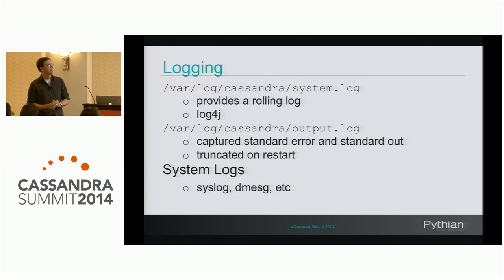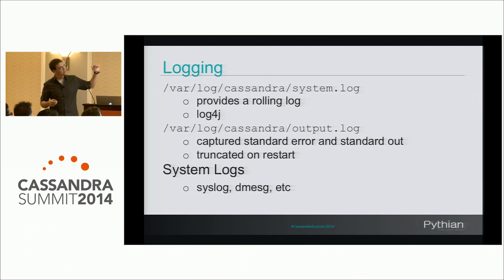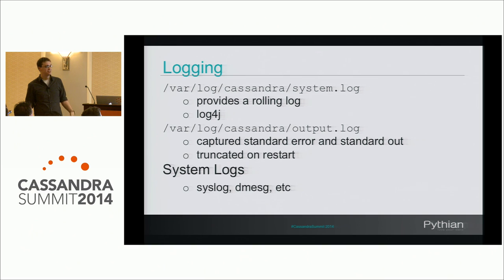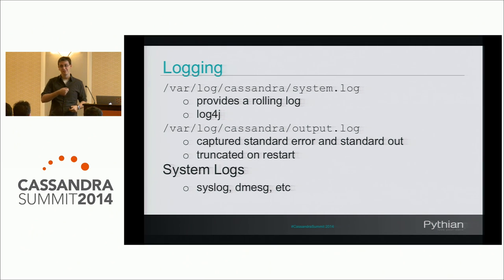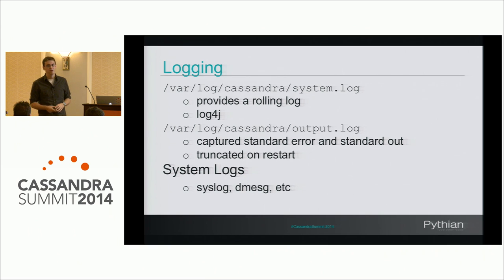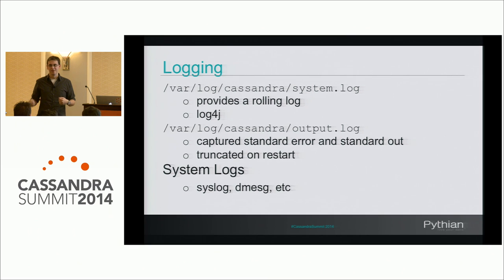There are a couple of logs in Cassandra, and log aggregation is important — you should have something like Splunk set up. The system log is a rolling log — the output from log4j, also going to standard out, which you can disable in log4j properties. The output log truncates on each restart, which is good and bad. Some exceptions won't be in the system log — if an uncaught exception propagates to the top of a thread pool, it dumps the stack trace to standard error only, not the system log. So it's good to have the output log captured or create a backup before restarting.